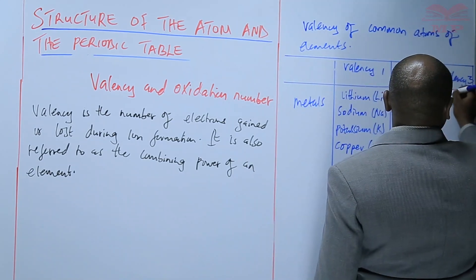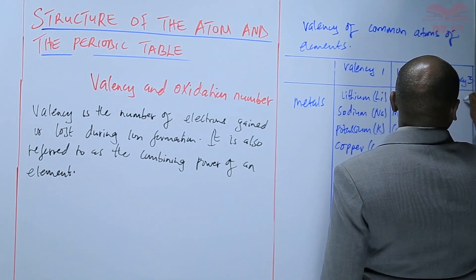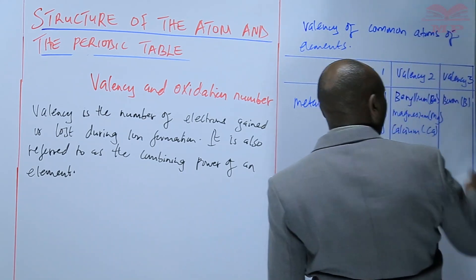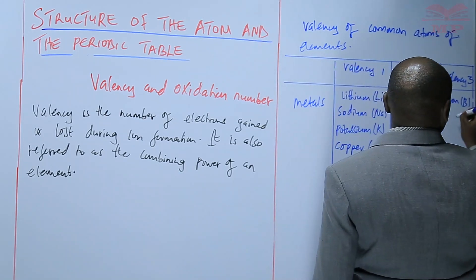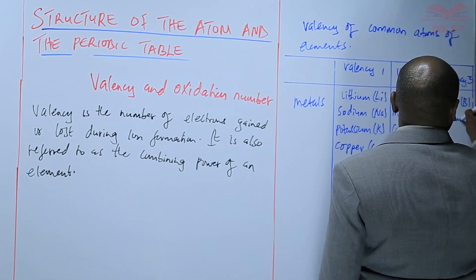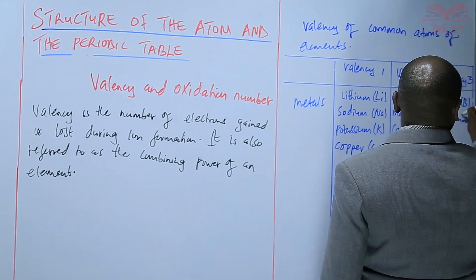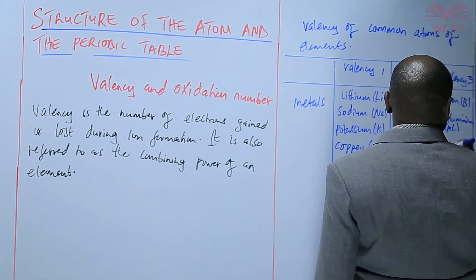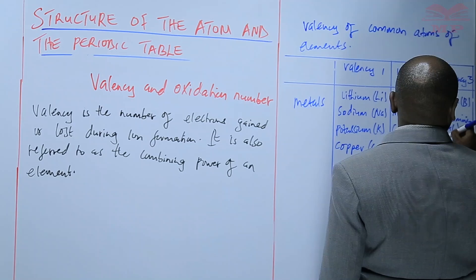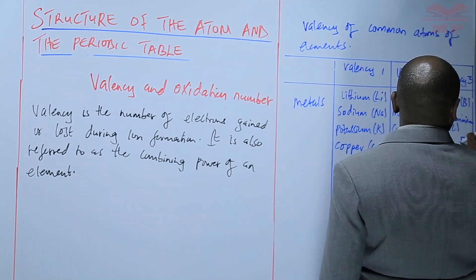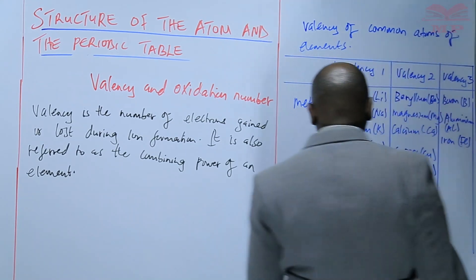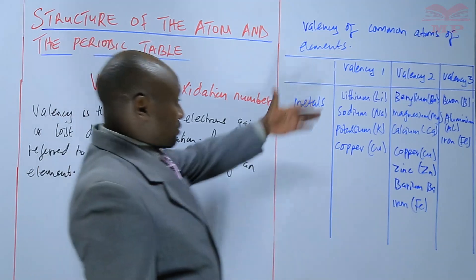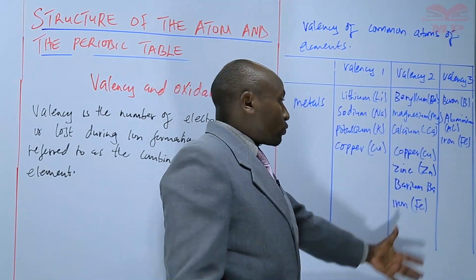For the valency of 3, we have boron — basically those that lose 3 electrons — and aluminium. We have also talked about iron with a valency of 3. So those are metals with a valency of 1, valency of 2, and valency of 3.